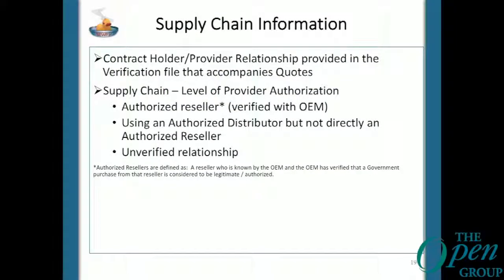Supply chain information is provided at the quote level. Every one of the 13 million items on our contract has an associated level of SCRM information. We add about 11,500 products every day, so the SUP contracts are constantly evolving. There are actually four levels of supply chain trust. The top level — least risk — is 'I am the manufacturer.' We have SUP contract holders like Dell, HPE, HPI, and IBM that actually make the products. Next is authorized reseller, which we split into two: authorized to sell everything from a company, or authorized to sell only a subset of that company's products.